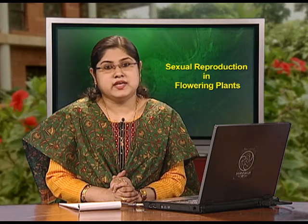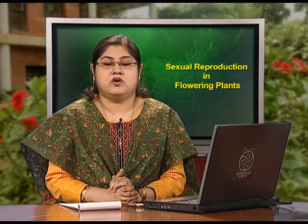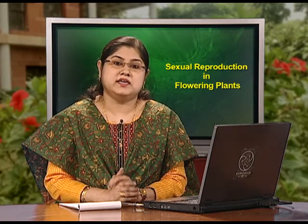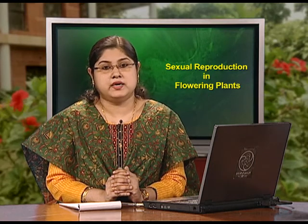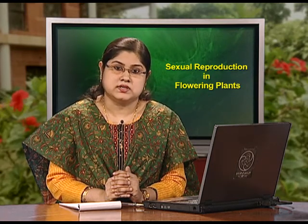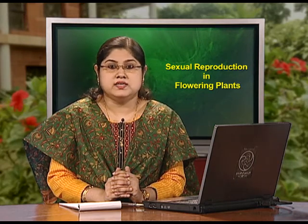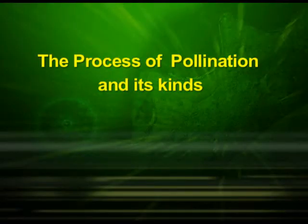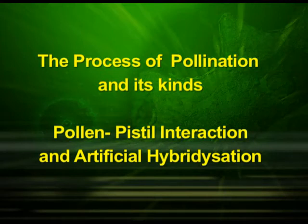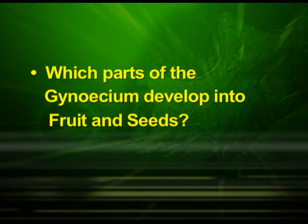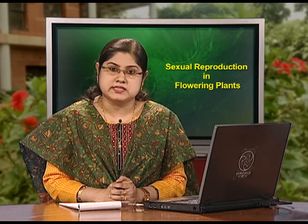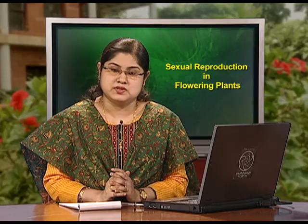With this we have come to the end of the second part of this lesson on sexual reproduction of flowering plants. Here we discussed the structure and development of the megasporangium or the ovule and the embryo sac along with its types. In the next episode, we will focus on the process of pollination and its kinds, pollen-pistil interaction, and artificial hybridization. The point for thinking for this part is: which part of the gynoecium develops into fruit and seeds? We will discuss this point in the next part of the program. Thank you.